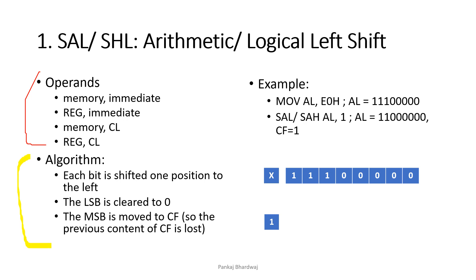The algorithm for SAL/SHL: each bit is shifted one position to the left. If this is the content in a register and this is the carry flag, after execution of SAL, each bit is shifted one position to the left. The MSB comes to the carry flag, and the LSB is cleared to 0.